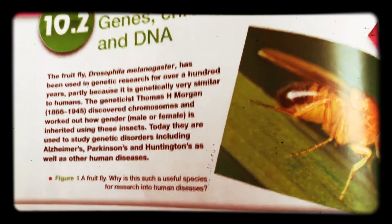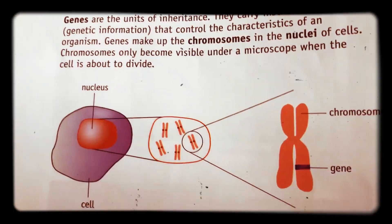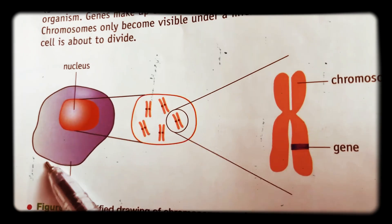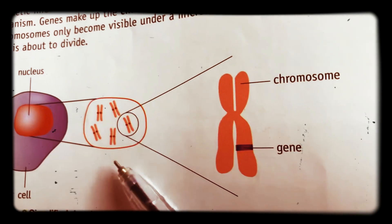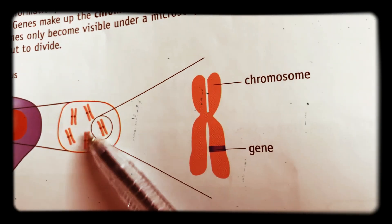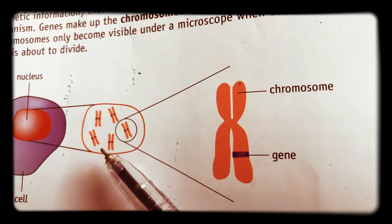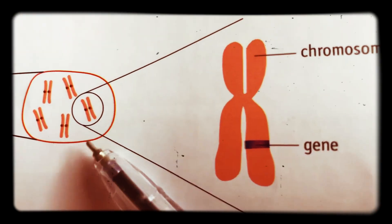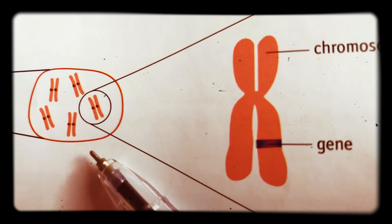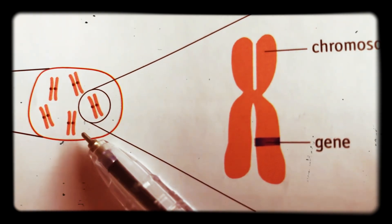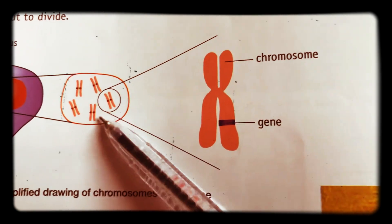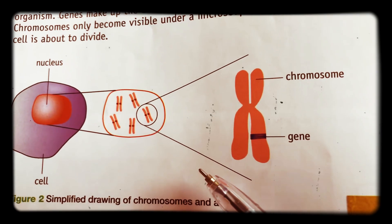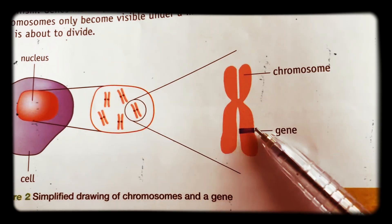The second section is about genes, chromosomes and DNA. You've got to know how big they are compared to each other. This is the larger structure, which is the cell. Inside the cell you have a nucleus, and inside the nucleus you have chromosomes. There are 23 pairs of chromosomes in a human adult cell — 23 pairs. It's only in the gametes, the sex cells of eggs and sperm, that they have 23 chromosomes. So there are normally 23 pairs, which make up 46 chromosomes in a normal human cell, but in the sex cells there are 23 chromosomes.